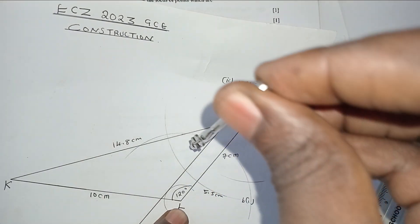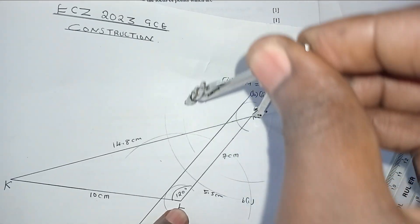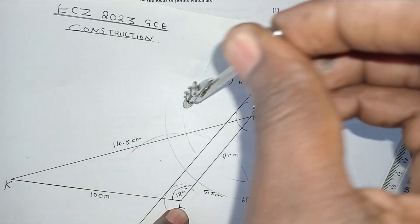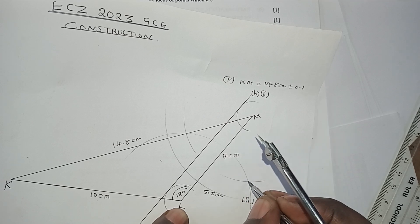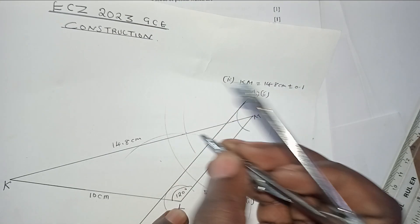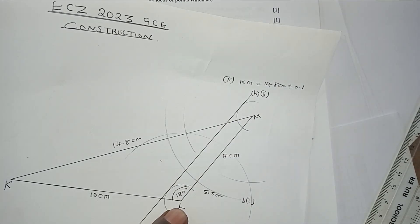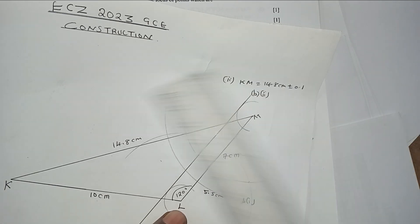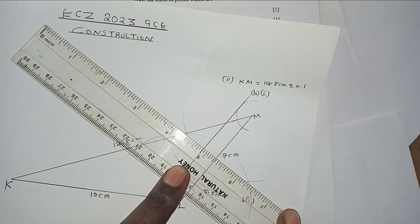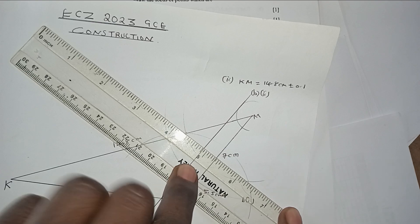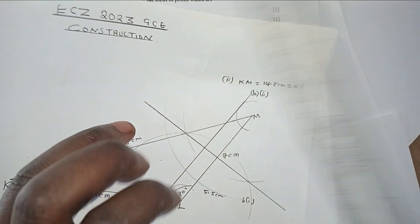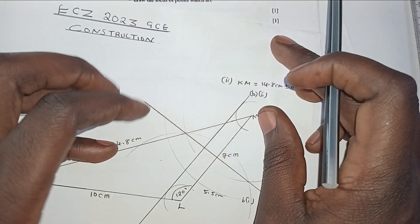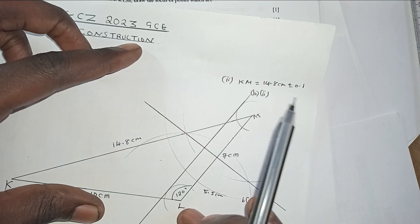Make sure these arcs intersect at two points — one inside and one outside the triangle. Join these two intersection points with your ruler. This line is the locus of points equidistant from L and M, which is the perpendicular bisector of LM.